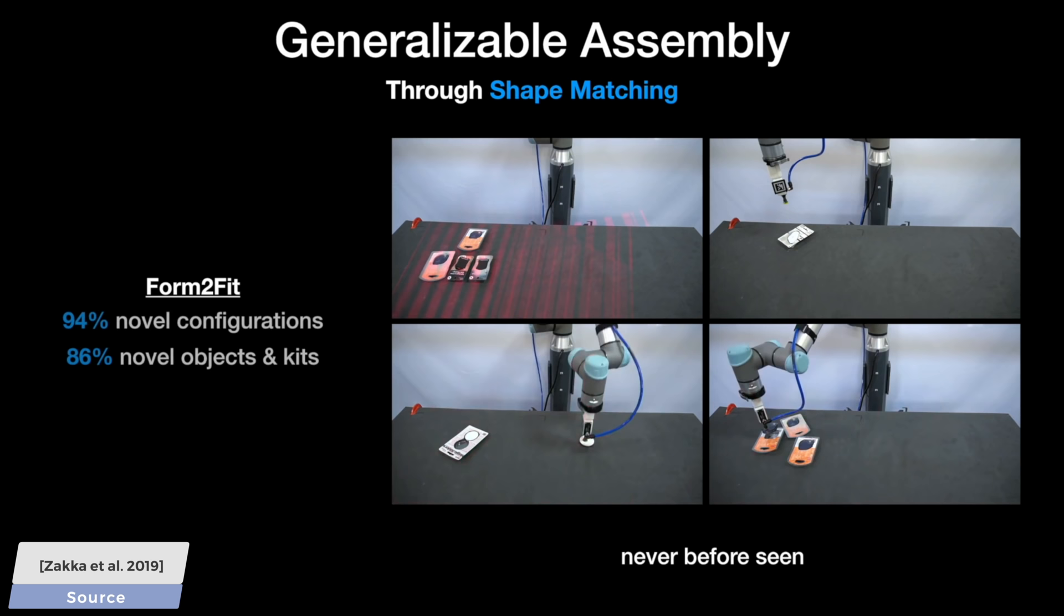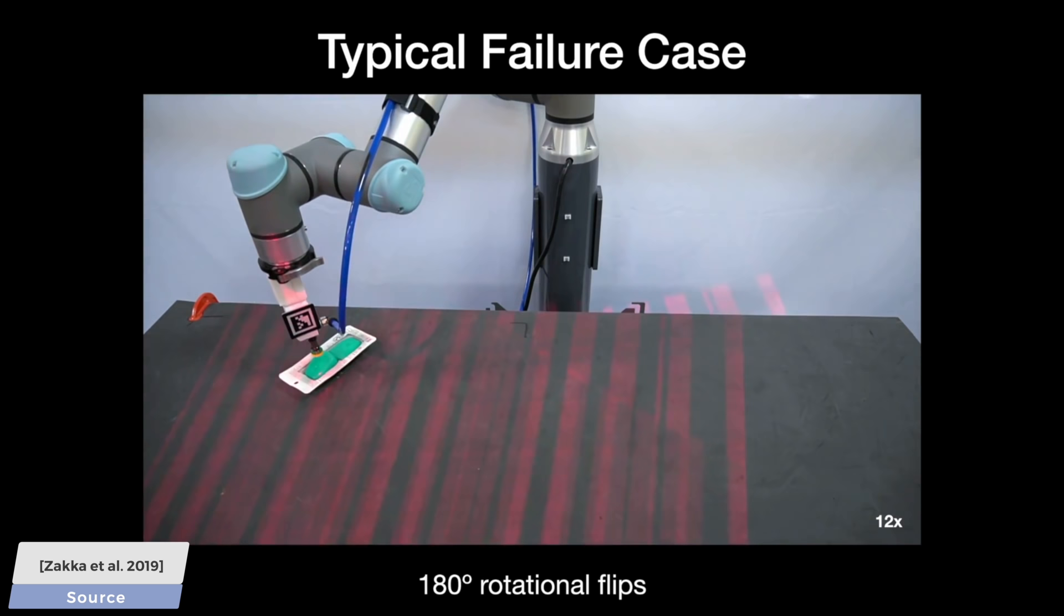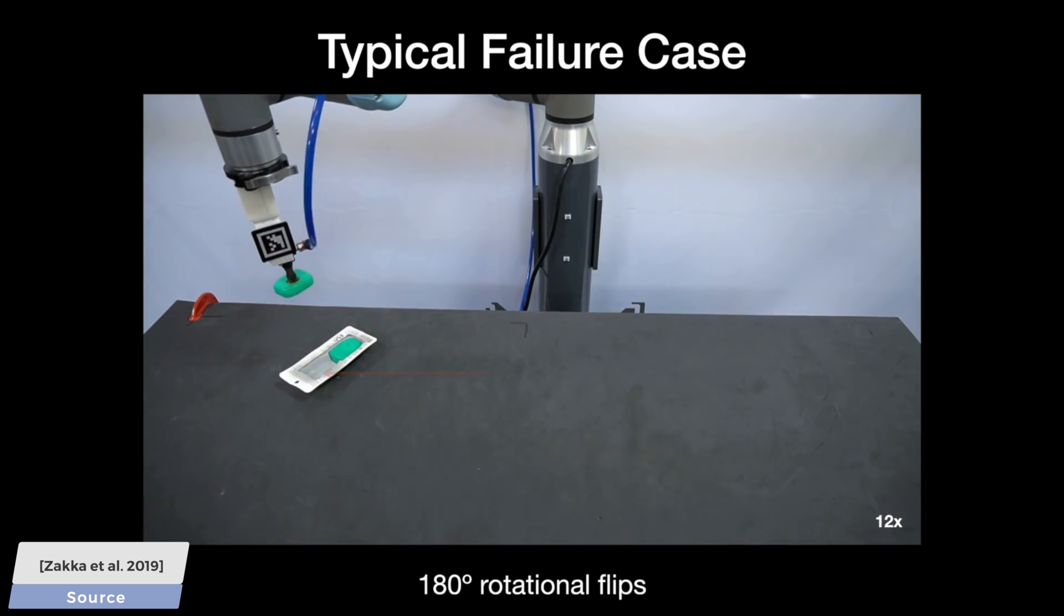So, what about the limitations? This technique works on a 2D planar surface, for instance, this table, and while it is able to insert most of these parts vertically, it does not deal well with more complex assemblies that require inserting screws and pegs in a 45 degree angle. As we always say, two more papers down the line, and this will likely be improved significantly.